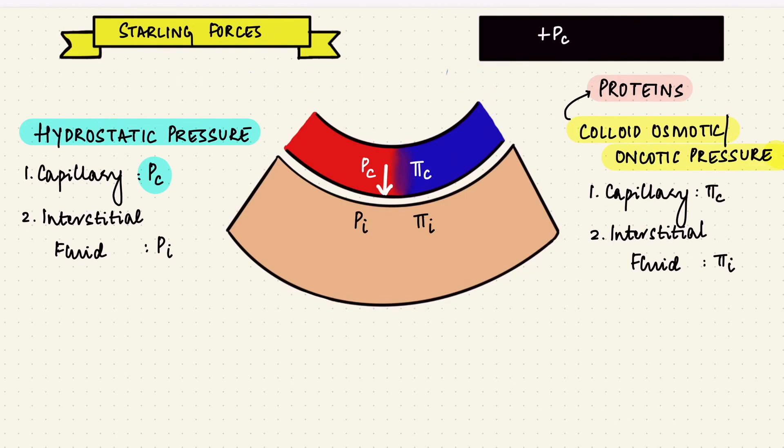While the interstitial fluid hydrostatic pressure, Pi, pushes fluid back into the capillary membrane. So it's negative. The Pi is very low because the fluid is trapped in the gel.